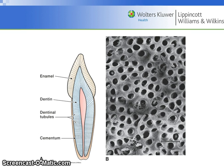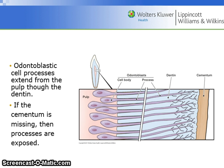Figure 24.4 on page 404 in your book shows a diagram illustrating the numerous dentinal tubules that penetrate the dentin. On the right, a scanning electron micrograph of the cross section of dentinal tubules adjacent to the pulp chamber of a human tooth is shown. Figure 24.5 on the same page shows the odontoblastic cell processes that extend from the pulp through the dentin. If the cementum is missing, then these processes are exposed.